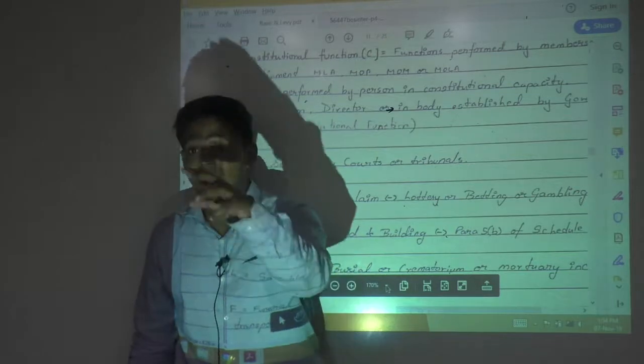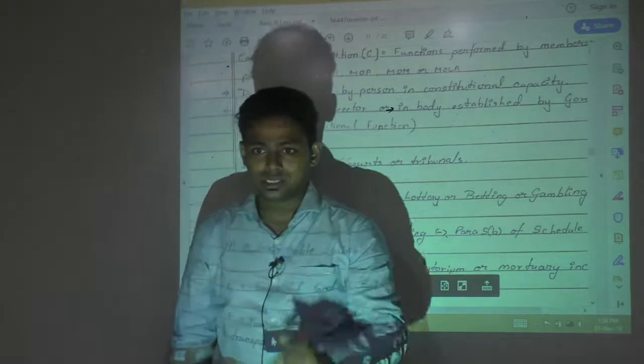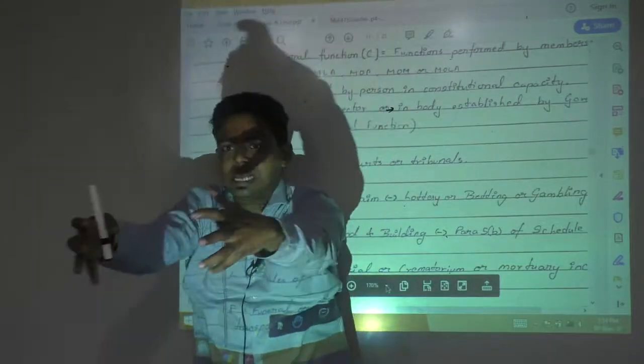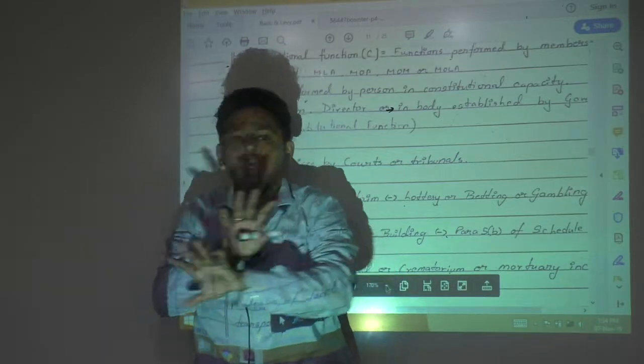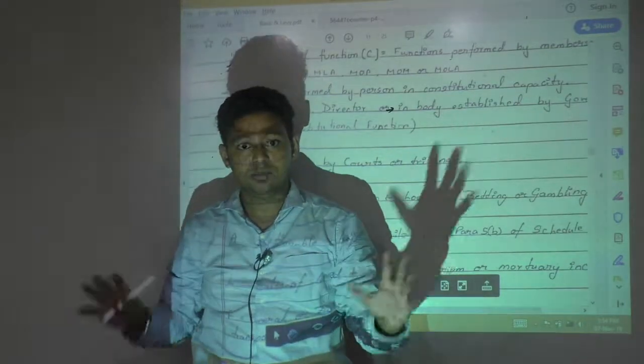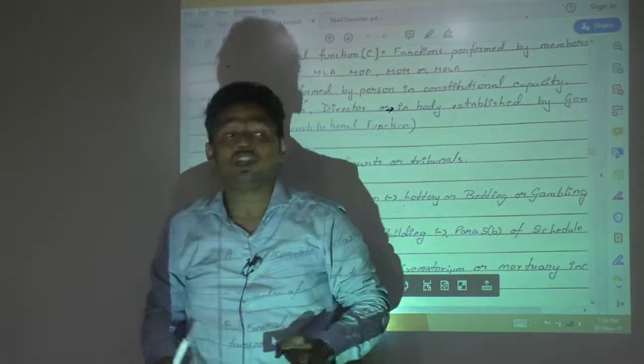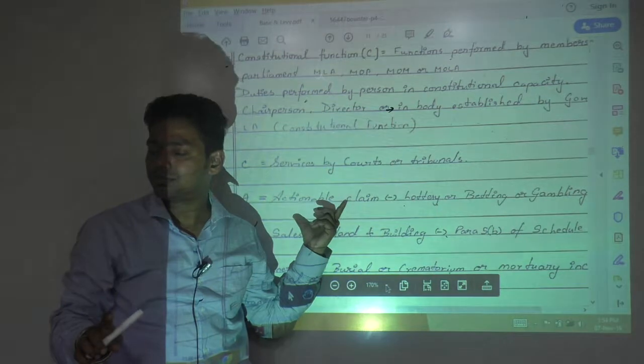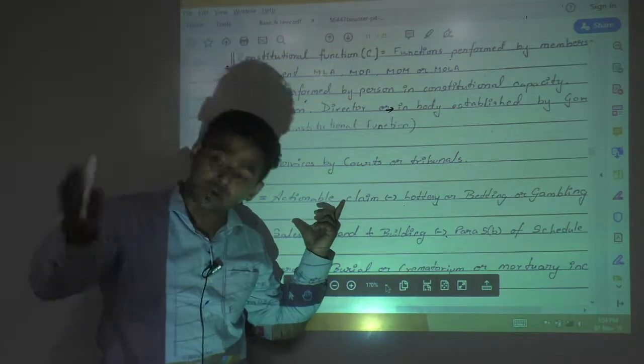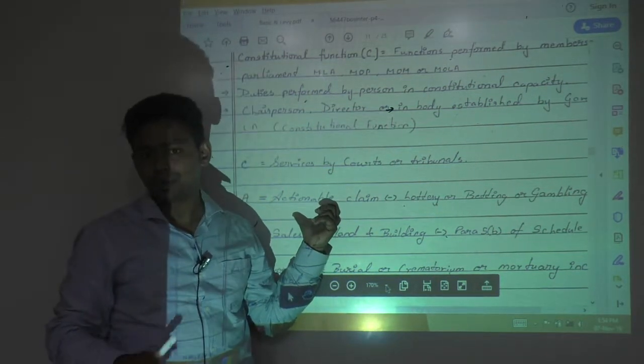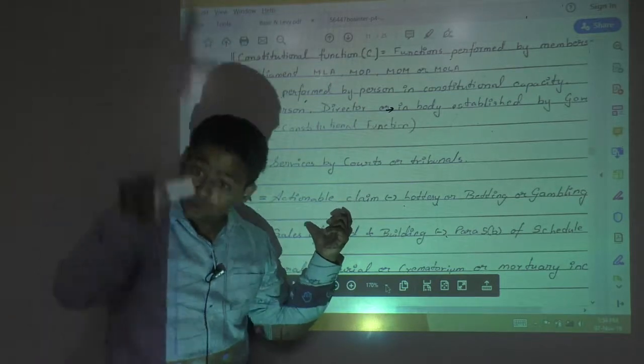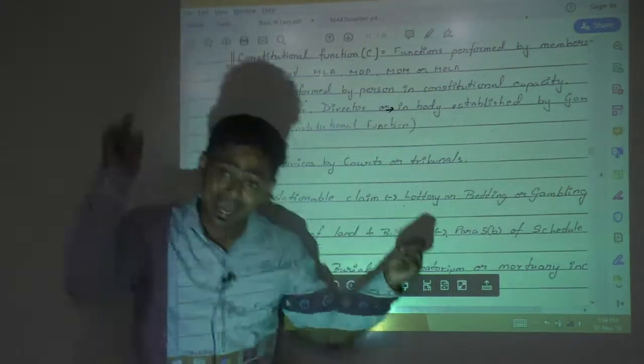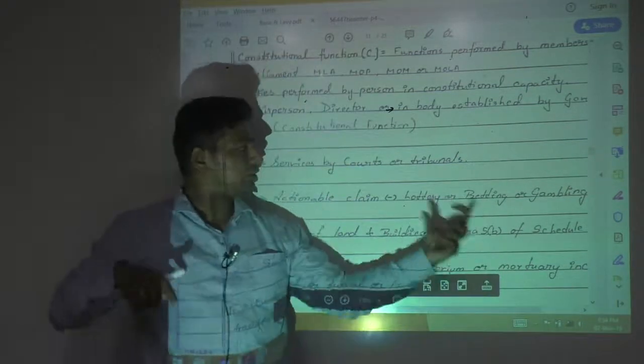But look at the purpose why government have done this. They brought all actionable claims in the definition of goods. They don't want to tax it. But they brought all actionable claim in the definition of goods. They don't want to tax actionable claim. Therefore it is written in schedule 3. So actionable claims are goods but not taxable. Actionable claims are goods but not taxable. Except 3 actionable claims.